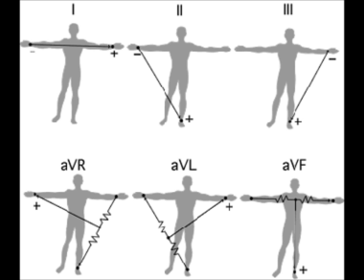The precordial chest leads are V1, V2, V3, V4, V5, and V6.